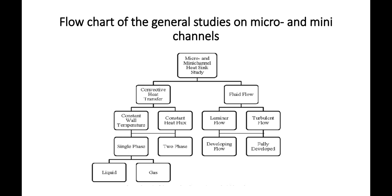Convective Heat Transfer consists of constant wall temperature and constant heat flux, having single phase and two phase, where single phase includes liquid and gases. The fluid flow includes laminar flow and turbulent flow. Laminar flow has developing flow whereas turbulent flow is fully developed.